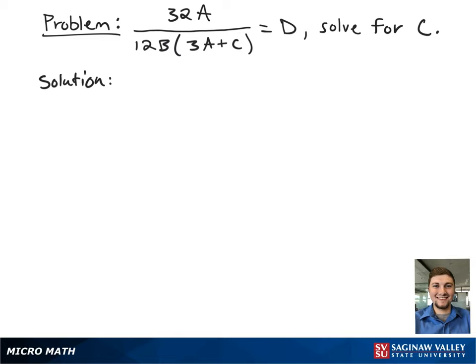Here we have the formula 32A over 12B times the quantity 3A plus C equals D, and we're asked to solve for C.